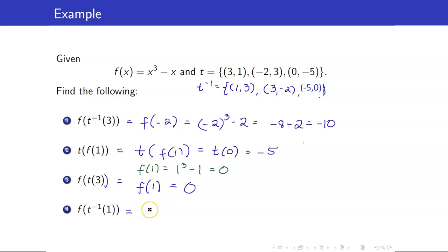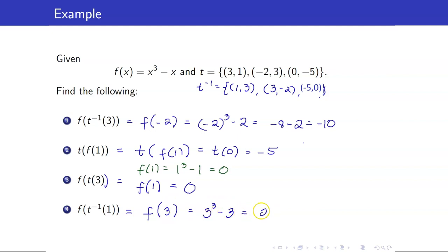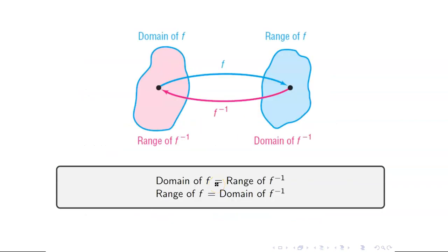Lastly, f of t inverse of 1. Looking at t inverse, when x is 1, its y-coordinate is 3, so t inverse of 1 is 3. And f of 3 is 3 cubed minus 3, that's 27 minus 3, or 24. I have already mentioned this in the previous slides, but again, the domain and range of a function and its inverse get interchanged.